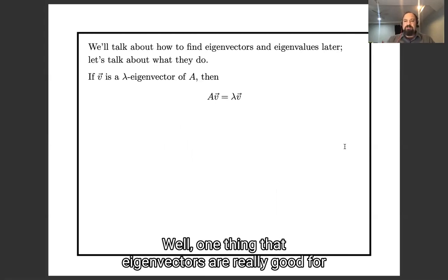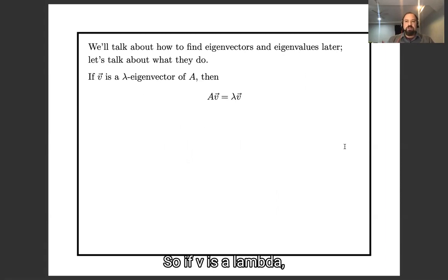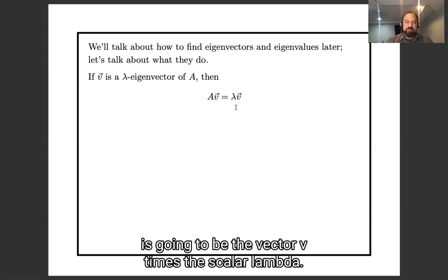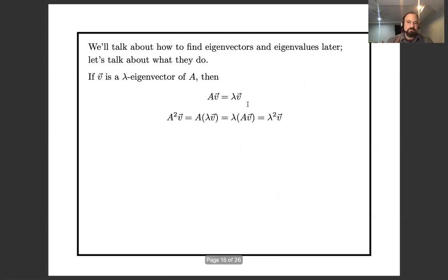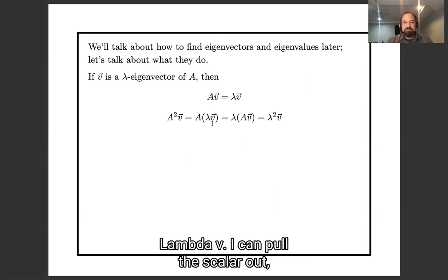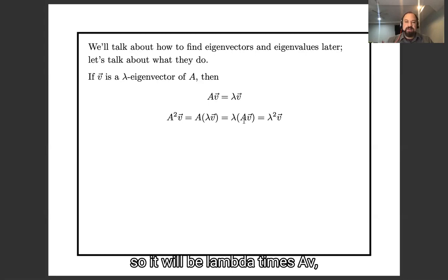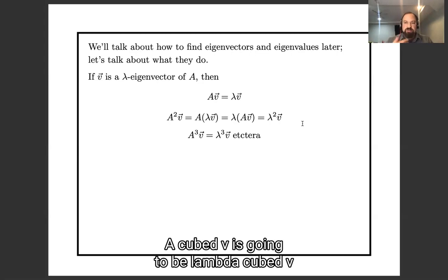One thing that eigenvectors are really good for is problems which involve powers of matrices. So if v is a λ-eigenvector, then A times the vector v is going to be the vector v times the scalar λ. That's the definition of an eigenvector. And A² times v is going to be A times λv. I can pull the scalar out, so it's going to be λ times Av. That's going to be λ²v. And keep it going this way, A³v is going to be λ³v, and A^n v is going to be λ^n v.